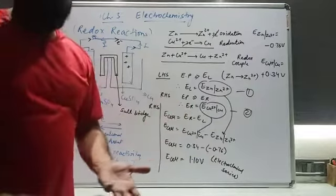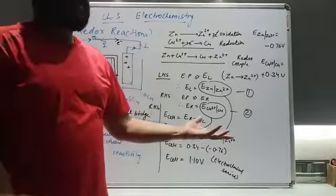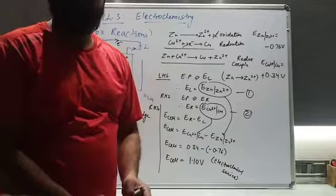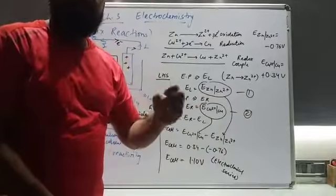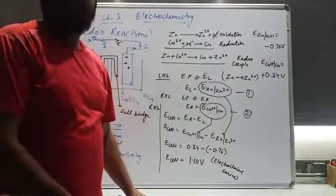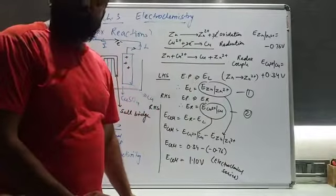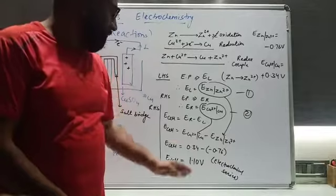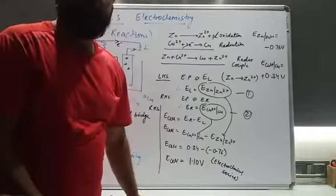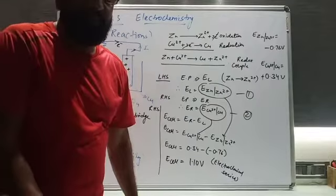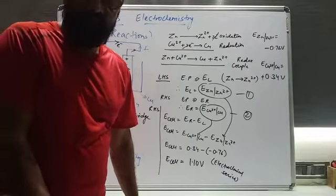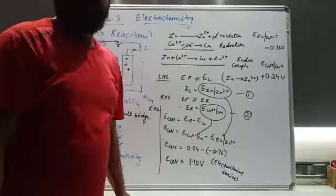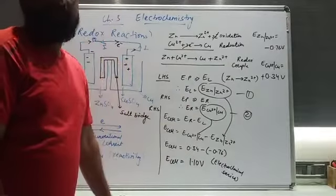We can make any combination — copper-nickel, nickel-silver, copper-silver — we can make any type of combination and calculate the electrode potential to get the EMF of the cell. So this is the topic; we just have to go through the book and we will take the next topic later.